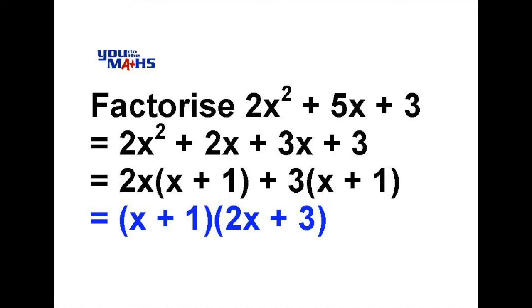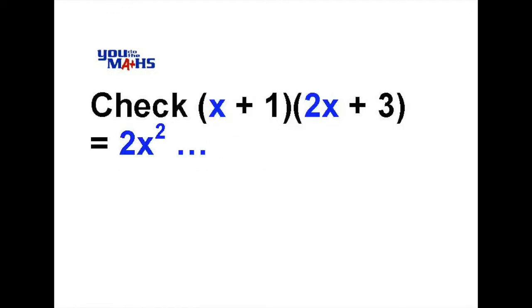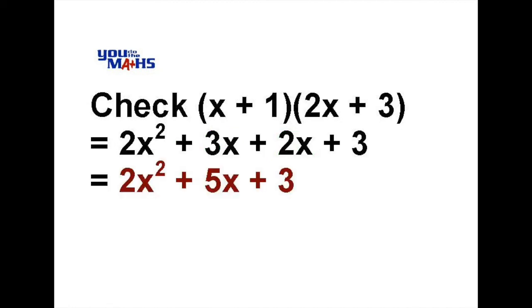Let's check to see that our factorization works. If we expand the brackets, x and 2x gives us 2x squared. x multiplied by positive 3 gives positive 3x. The 1 multiplied by 2x gives positive 2x, and positive 1 times positive 3 gives positive 3. We simplify the like terms, 3x and 2x, to give us 2x squared plus 5x plus 3.